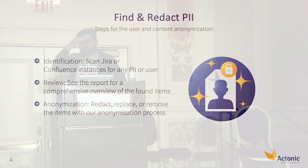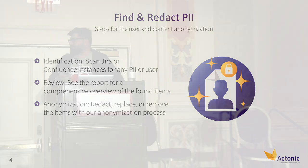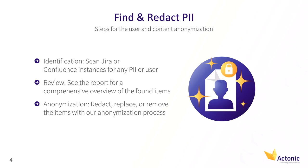The second step is review, where you can see the actual report of your search, scan, or anonymization process. You can see how many PIIs there are, how many items are to be anonymized, and so on. The last step is the anonymization step, where you can redact, replace, or remove items with our anonymization process. You can skip the first two steps and go directly to anonymization, or first scan to see what's going on in your instance.